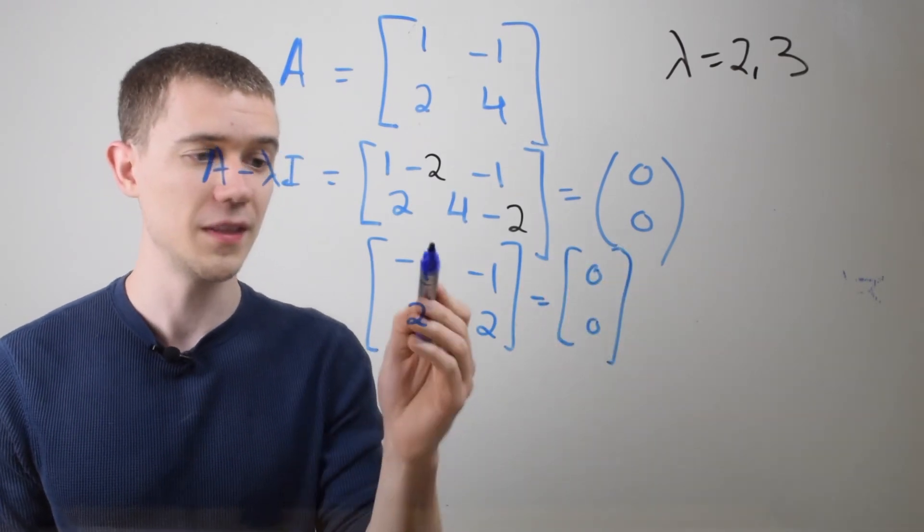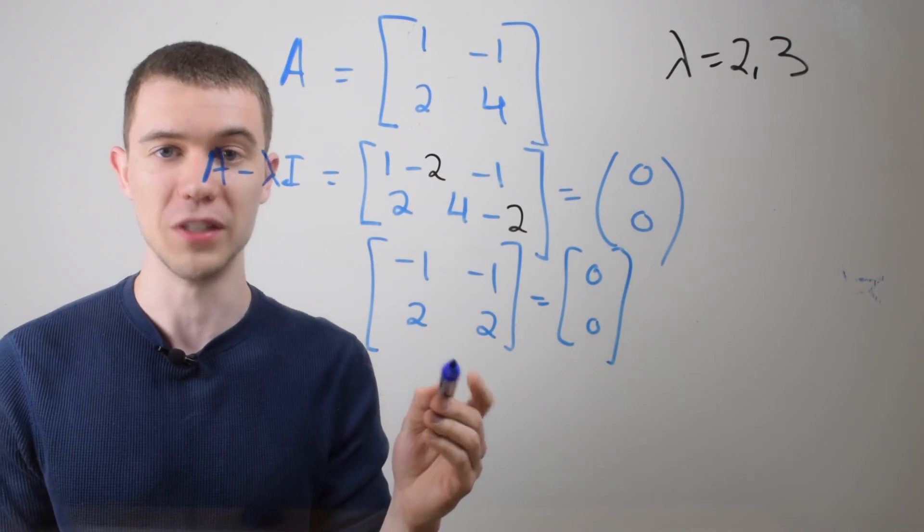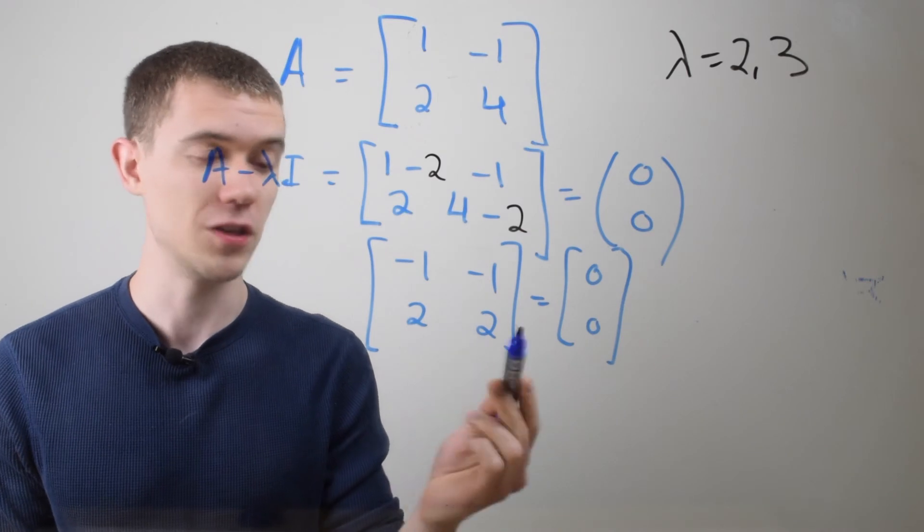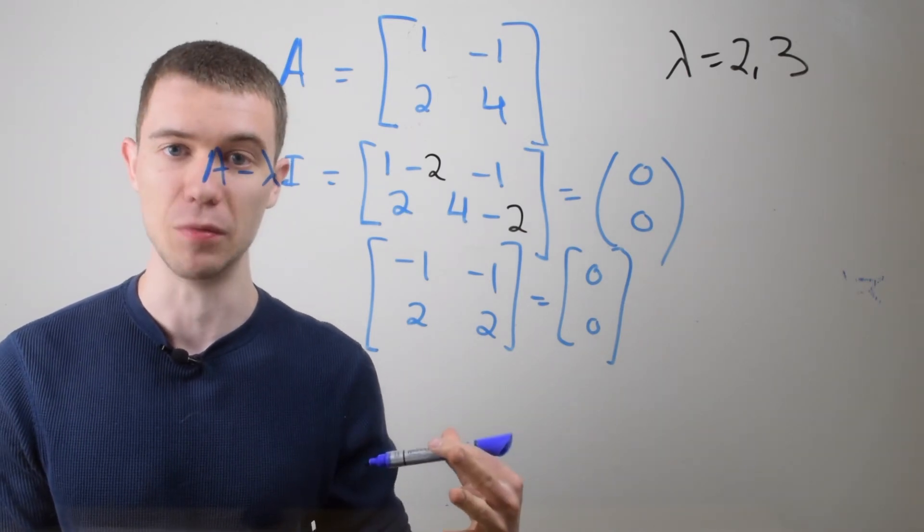And you'll notice that these rows are scalar multiples of each other. So if you were to reduce this in reduced row echelon form, you would see that you'd get a row of all zeros. And that's going to happen with this.